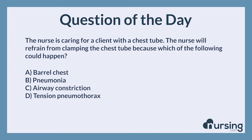The correct answer is D. Tension pneumothorax. Clamping a chest tube can cause a tension pneumothorax because it becomes a one-way valve for air to enter the pleural space, but the air cannot escape because the tube is clamped.